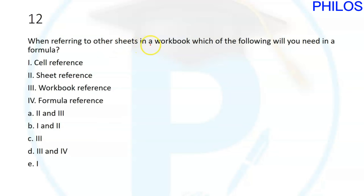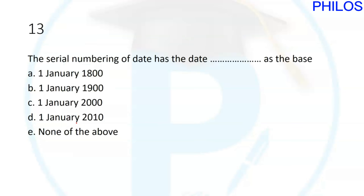Question twelve: when referring to other sheets in a workbook, which of the following will you need in a formula? We used both cell referencing (TT1 to TT10) and sheet referencing (Sheet1 to Sheet4). So the answer to question twelve is B: both cell reference and sheet reference — options I and II.